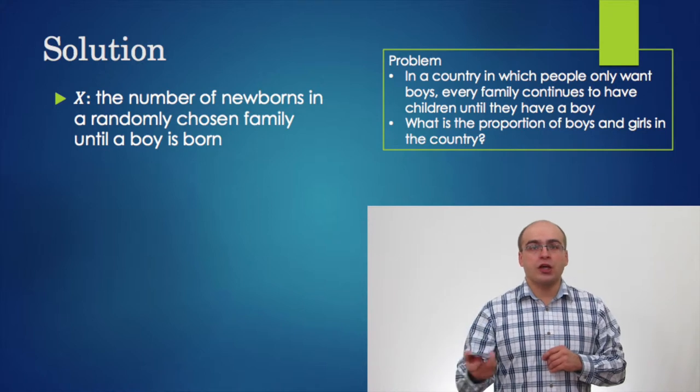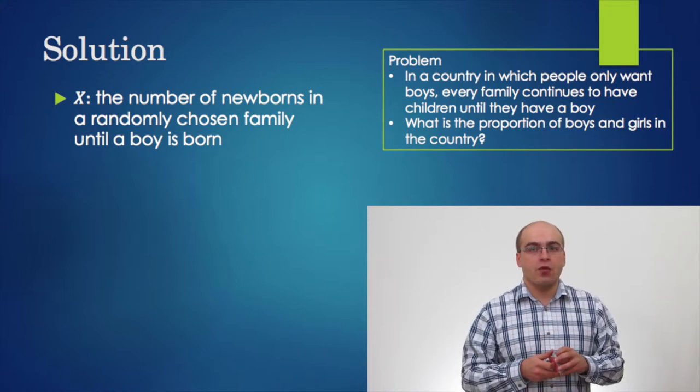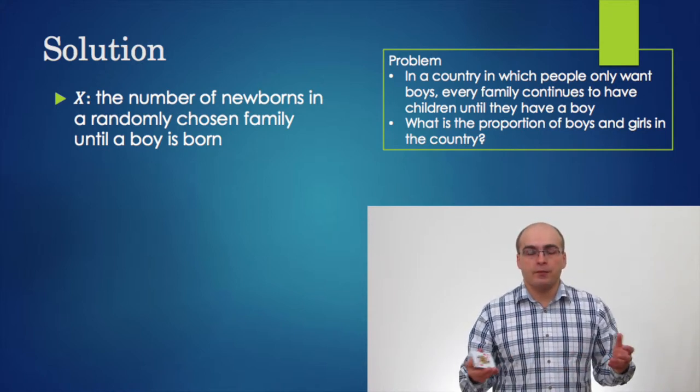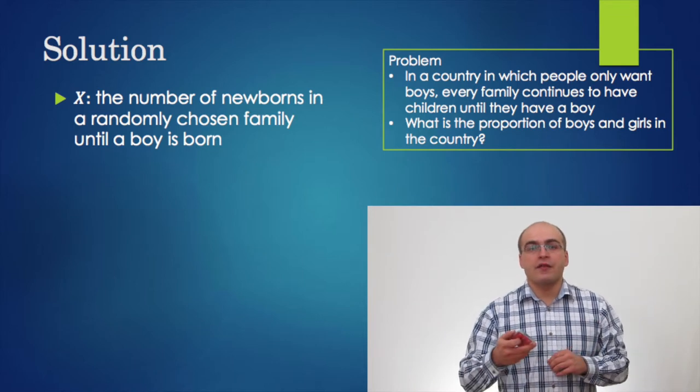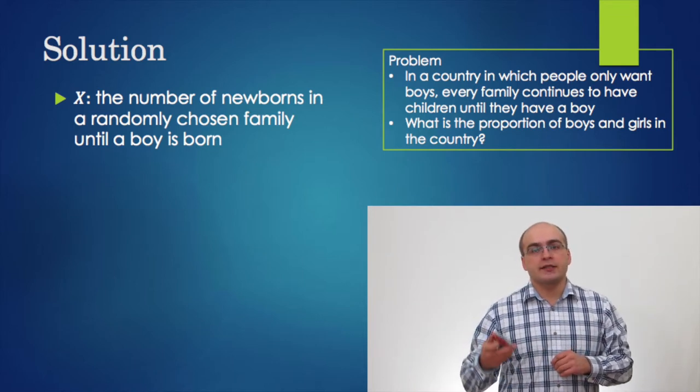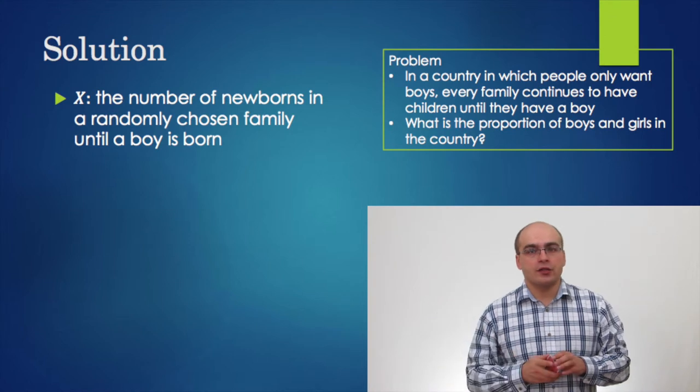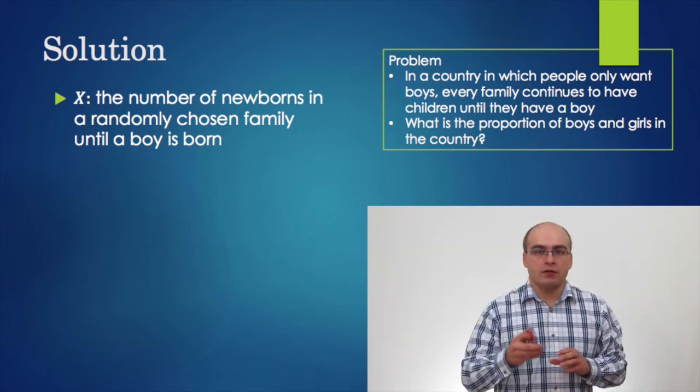So, if the first child in that family is a boy, then x equals 1. If the first child is a girl, then the family continues to have children and say, if the second child is a boy, then x equals 2.